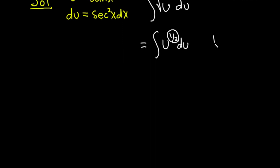So one half plus one is really one half plus two halves, which is three halves. Okay, so this is going to be u to the three halves, and then you're supposed to divide by three halves. And then we add our constant of integration, which is capital C.